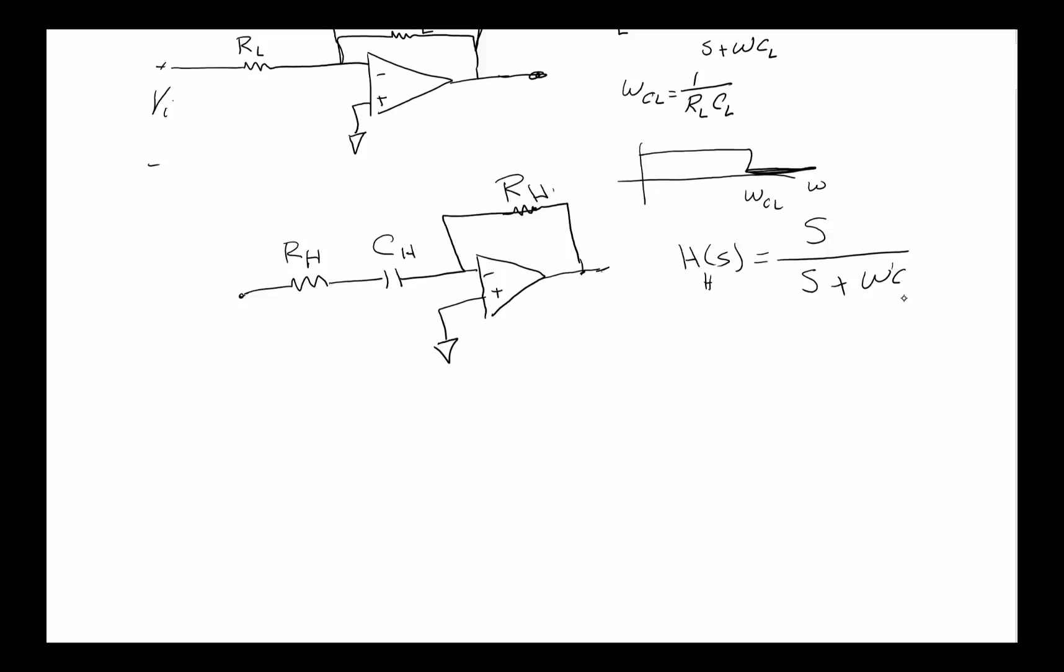This is omega subscript c low pass, the cutoff frequency for the high pass one. These are actually all inverting, so you have a negative in front of them. And omega c high is going to be 1 over R high C high.